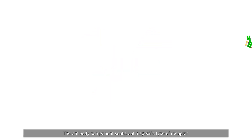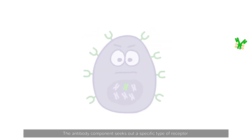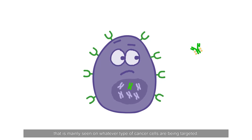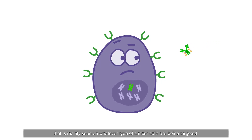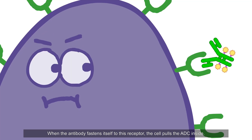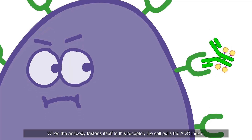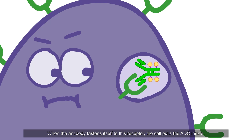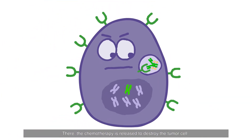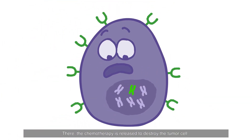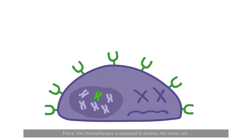The antibody component seeks out a specific type of receptor that is mainly seen on whatever type of cancer cells are being targeted. When the antibody fastens itself to this receptor, the cell pulls the ADC inside. There, the chemotherapy is released to destroy the tumor cell.